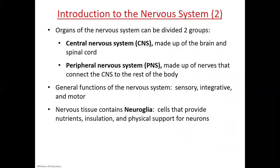The nervous system is divided into two major groupings: the CNS and the PNS. The central nervous system is located in the center of the body and consists of just two organs — the brain and the spinal cord. The peripheral nervous system is made up of all the nerves that travel from the CNS out to all the organs in the body.